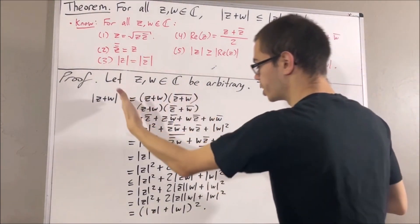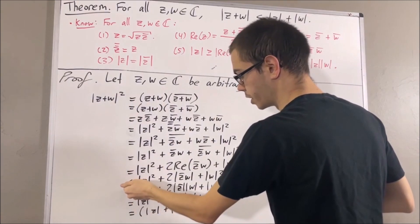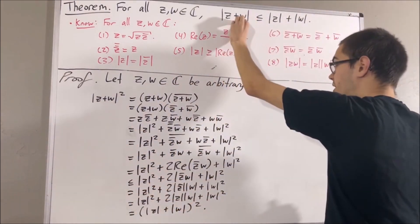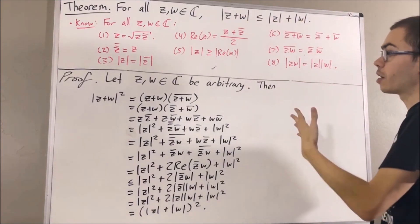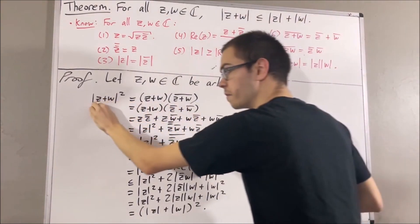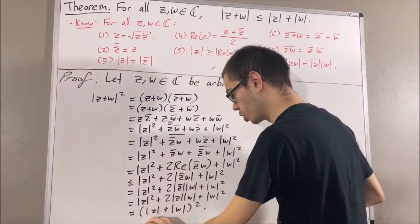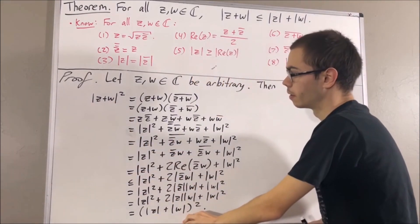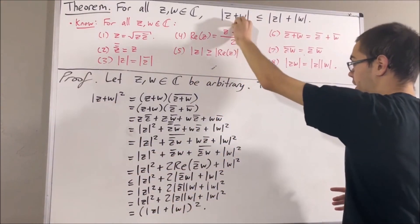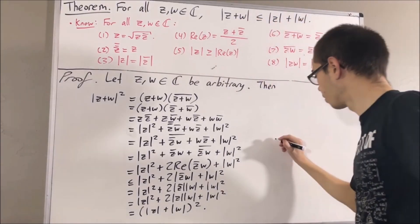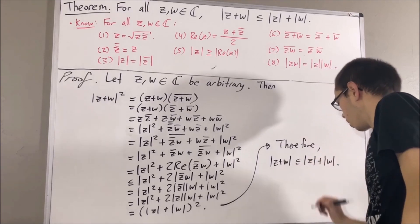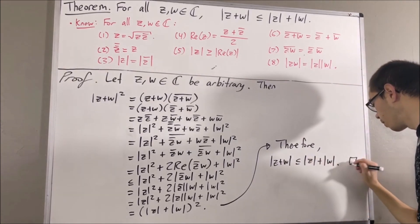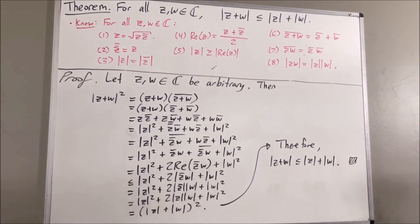We have shown through this chain — with only a single inequality — that |z + w|² ≤ (|z| + |w|)². From there it follows that |z + w| ≤ |z| + |w|, which completes the proof. And that's pretty much it for this video.